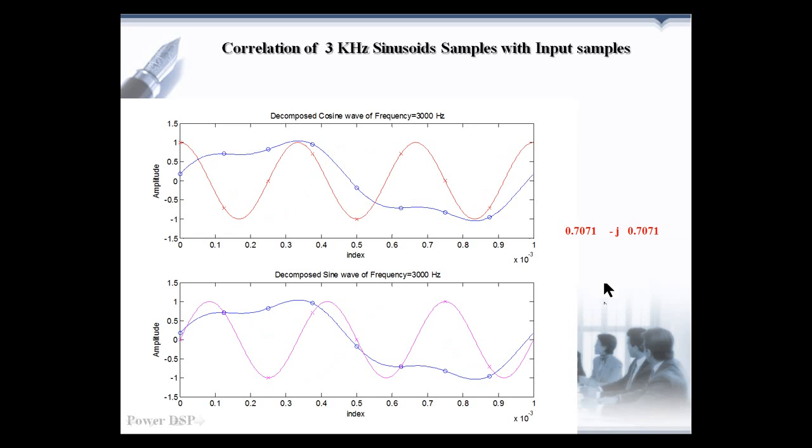In this case, we are comparing the 3 kHz sinusoid with the input signal. We got some magnitude here. So, we can tell 3 kHz sinusoid is present in the input signal.